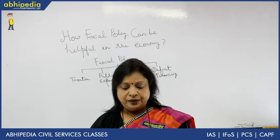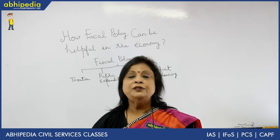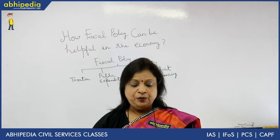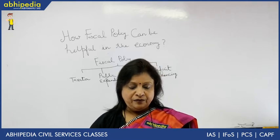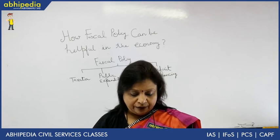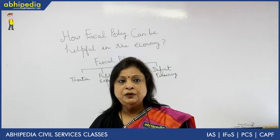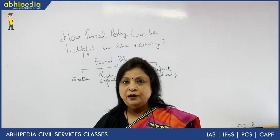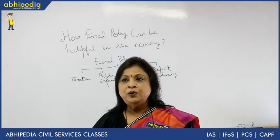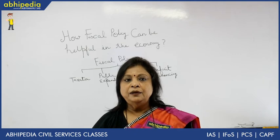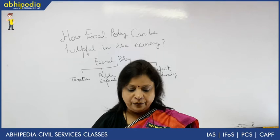The second instrument of fiscal policy is public expenditure policy, which influences the economic activities of a country in a big way. Public expenditure can be of two types: developmental expenditure and non-developmental expenditure. Developmental expenditure brings about development in the economy, helps achieve more economic growth, and increases productive capacity. Examples include extension of means of transport and communication, irrigation, completion of power projects, and expansion of educational and health facilities.